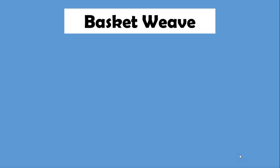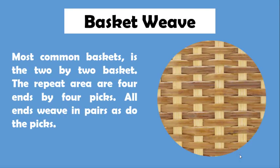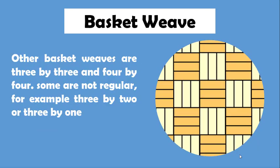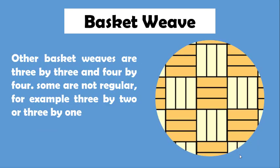The basket weave is a derivative of the plain weave. The most common basket is the two by two basket. The repeat area is four ends by four picks. All ends weave in pairs to the picks. This illustration shows a two by two weave, which gives a distinct checkerboard effect. Other basket weaves are three by three and four by four. Some are not regular, for example, three by two or three by one.